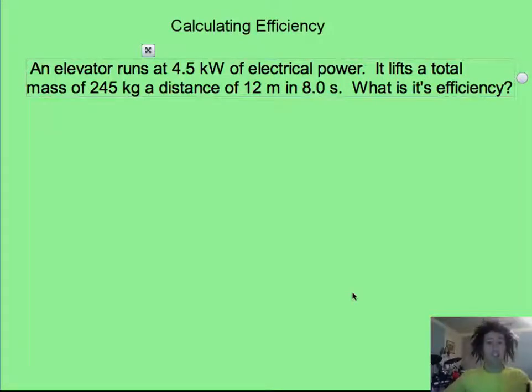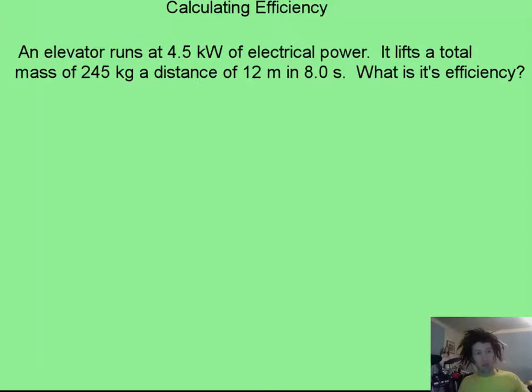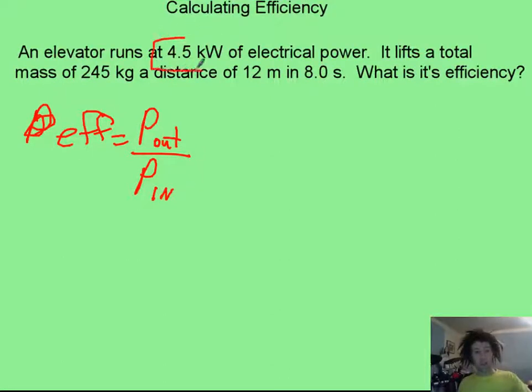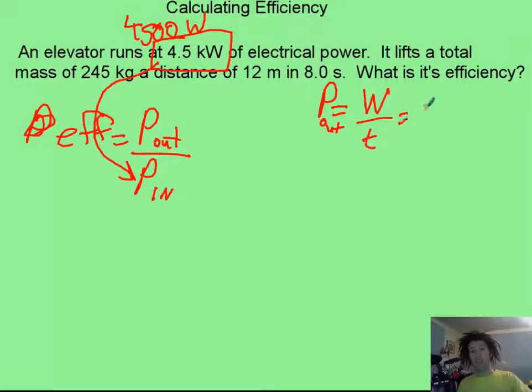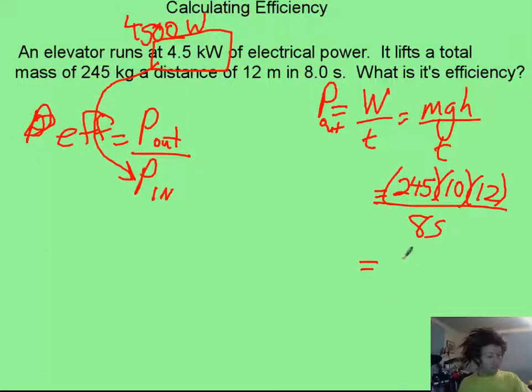Please pause it and try this efficiency slash elevator problem. Go! Now, we should realize that we are trying to find that efficiency is equal to power output, always your output on top, divided by power input. Clearly, our input will be this 4.5 kilowatts or the 4,500 watts right here. Now, our output, we have to figure out what that is because output is going to be work over time. That's the work of lifting. So, it's MGH again over time. So, we plug in our 245 kilos times 10 times our height of 12 meters. We divide by the 8 seconds. That's going to give us something like 3,675 watts.